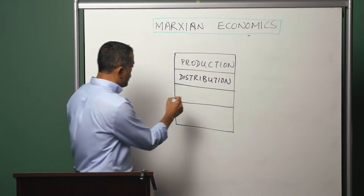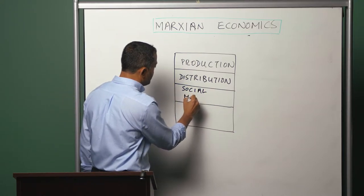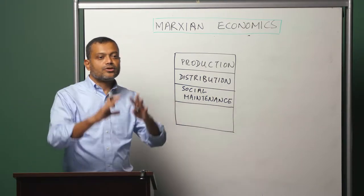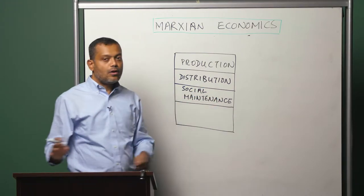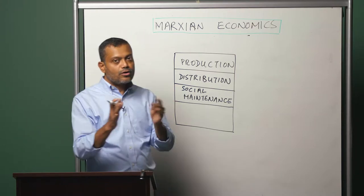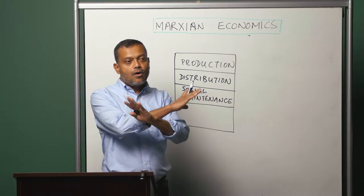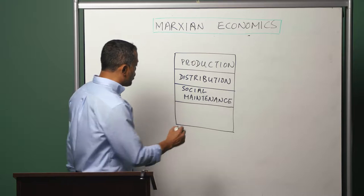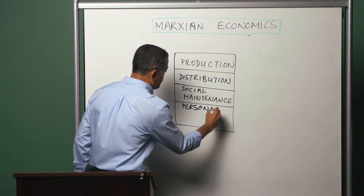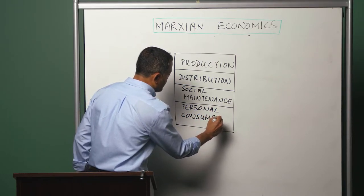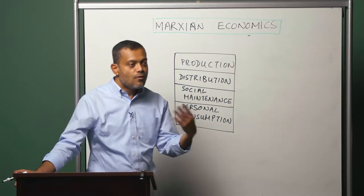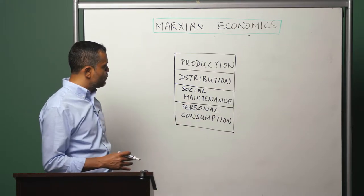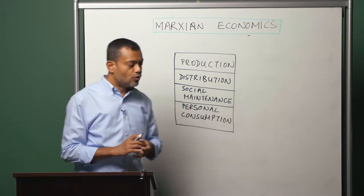The second non-production category is social maintenance — all activities required to ensure the reproduction of the social system of society as a whole. This includes all the activities of the state: the law and order machinery, the courts, the judiciary, the police, the military — all of which together ensure the social system remains in existence. The fourth box is personal consumption: all activities geared towards the maintenance of individuals, such as when we consume food, clothing, shelter, and healthcare — necessary to maintain and reproduce the individual over time.